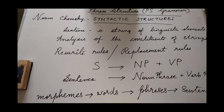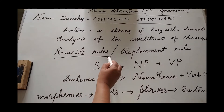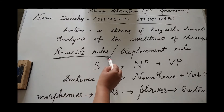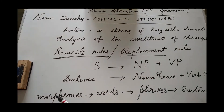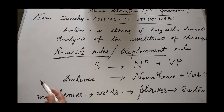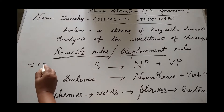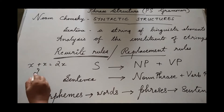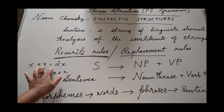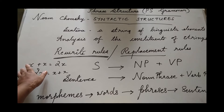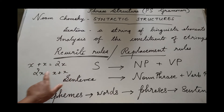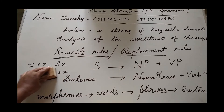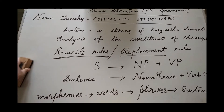So how is this possible? It is done with the help of certain rules called rewrite rules, or replacement rules. You might remember learning small equations in maths like this: x plus x equals 2x, or the other way, 2x equals x plus x. Whatever you find on the left-hand side can be rewritten in another way on the right-hand side. Similarly, a sentence can be represented in another way using rewrite rules.